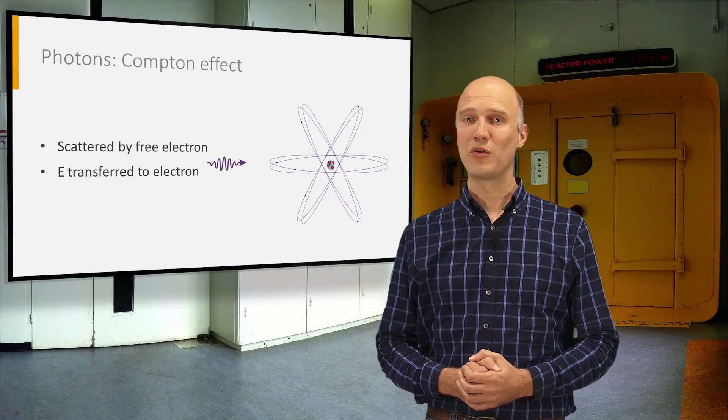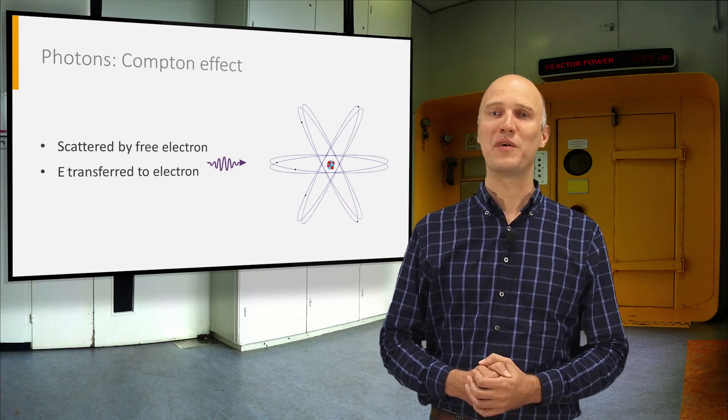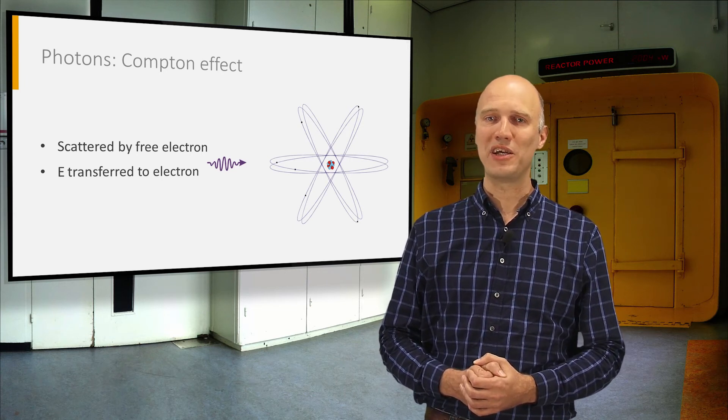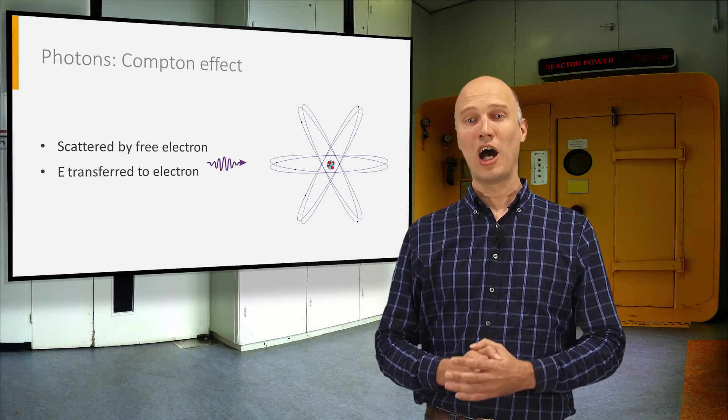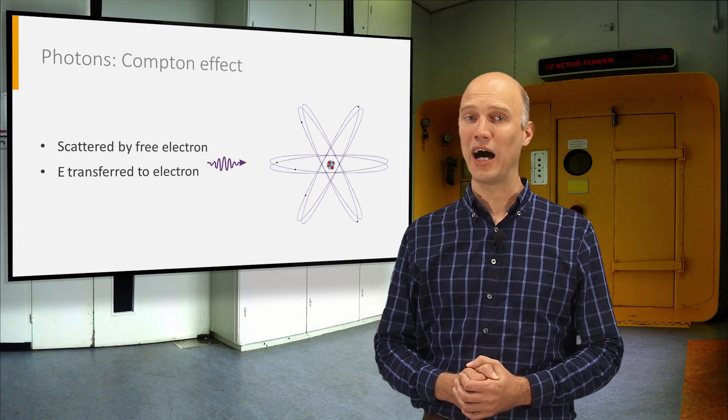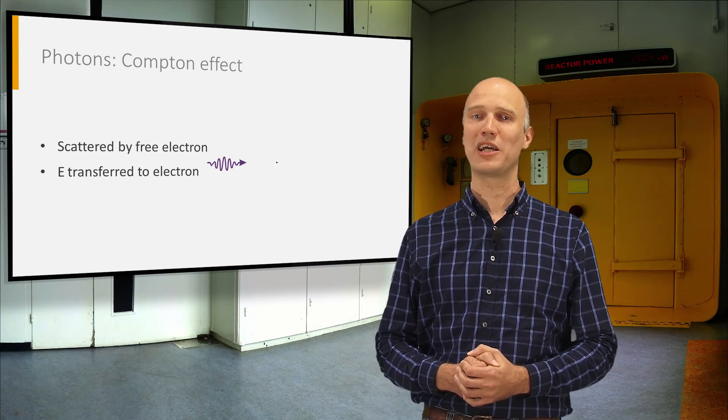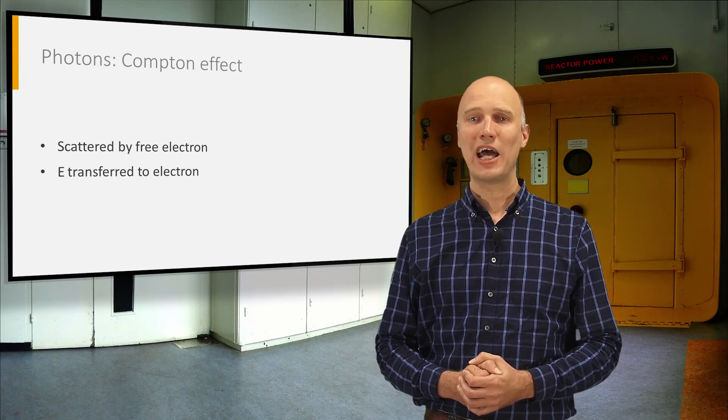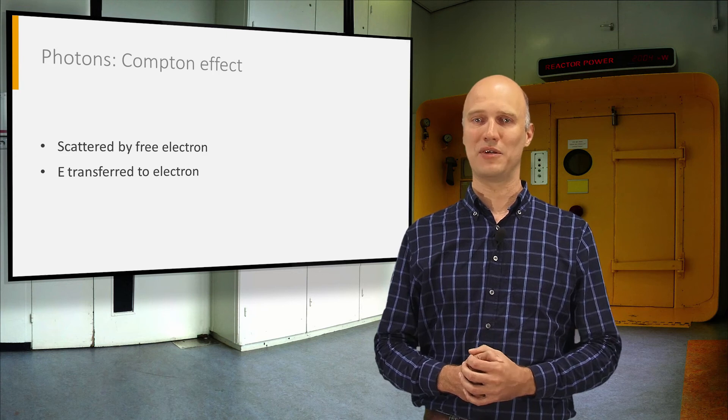In the Compton effect, the photon bounces off a free electron. In matter, electrons are not really free, but bound to atoms. However, if the photon energy is high enough, the binding with the atom can be neglected. The photon is scattered and will transfer a part of its energy to the electron.